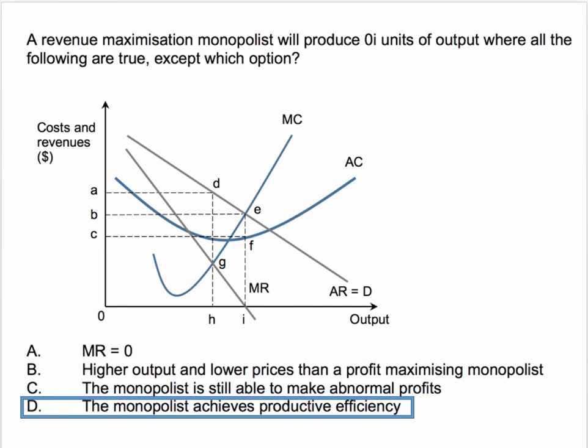Option C is also correct — the monopoly can still make some abnormal profit, equal to area B, E, F, C, because the price they're charging at output OI is still above the unit cost of production.